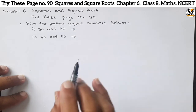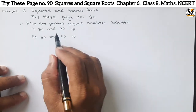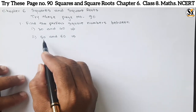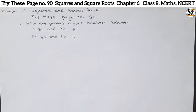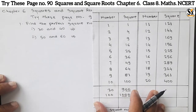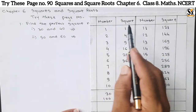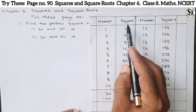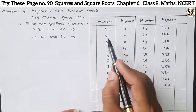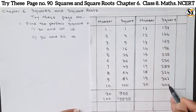So what is asked here? Find the perfect square numbers. Four, nine, sixteen — these are the perfect square numbers. We have to find the perfect square number between 30 and 40, and second one between 50 and 60. Now just see the chart. Here the numbers are given and the perfect square numbers are given. For one it is one, two gives four, three gives nine, and like this.